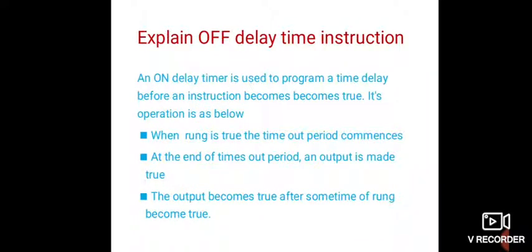Coming to the off-delay timer: it is used to include a delay after the output is energized. An off-delay timer is used to program a time delay after an instruction becomes true. When the rung is true, the timeout period commences, and at the end of the timeout period an output is made true — the output becomes true after some time from when the rung becomes true.